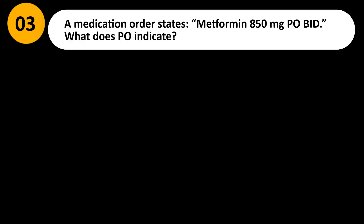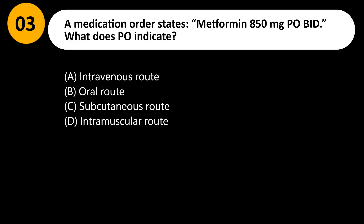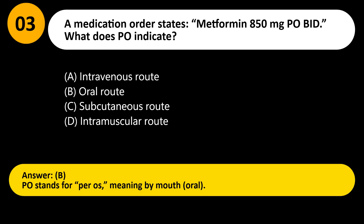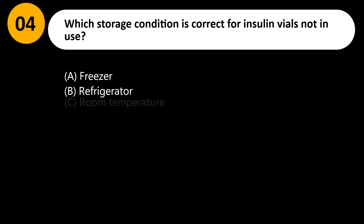A medication order states metformin 850 milligrams PO BID. What does PO indicate? A) Intravenous route, B) Oral route, C) Subcutaneous route, D) Intramuscular route. Answer: B. PO stands for per os, meaning by mouth — oral.